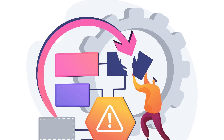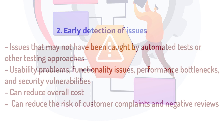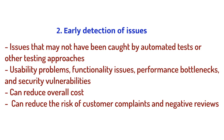Early detection of issues: In a DevOps environment where speed and agility are essential, early detection of issues is critical as it helps to reduce the overall cost and time required to deliver high quality software. Exploratory testing can play an important role in early detection of issues, as it allows testers to explore the software in an unscripted and ad hoc manner, identifying potential issues that may not have been caught by automated tests or other testing approaches. Moreover, it can also help reduce the risk of customer complaints and negative reviews.